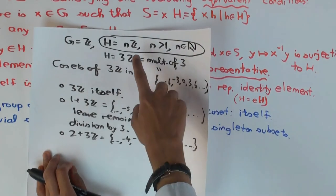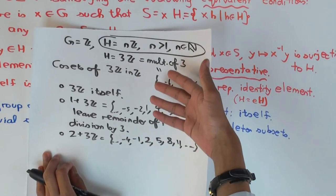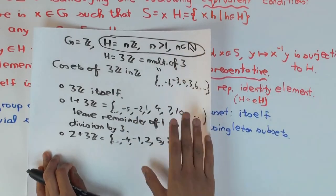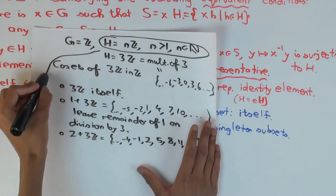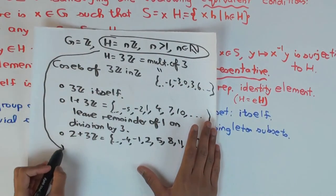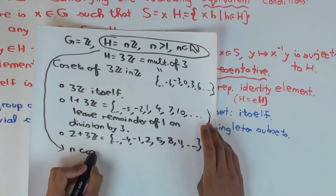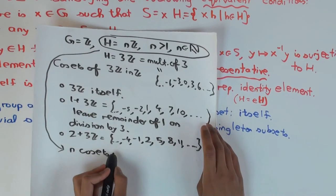In general, if instead of 3Z we take nZ, we would get n different cosets, corresponding to the remainders 0, 1, ..., n−1 when dividing by n.